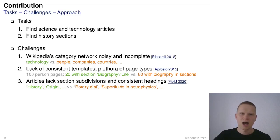Third, articles often lack subdivision and consistent headings. Where many pages do have a section called history or origin, there are also many pages which feature the technology's history in less conspicuously titled sections.